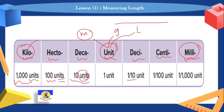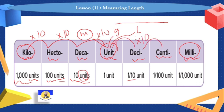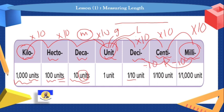If we want to change from the greatest to the smallest, an easier idea: from kilo to hecto we multiply by ten. From hecto to deca, multiply by ten. From deca to unit, multiply by ten. From unit to deci, multiply by ten. Every step we move, we multiply by ten. And if we want to change from smallest to greatest, we divide by ten each step.